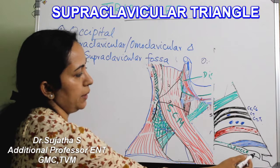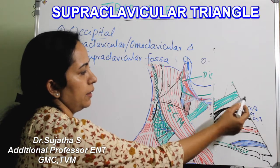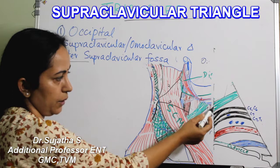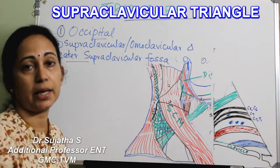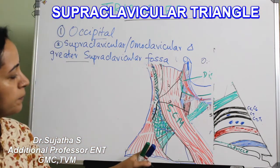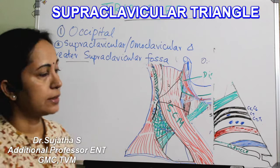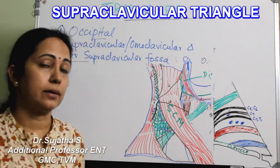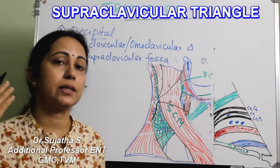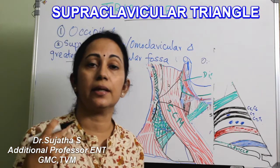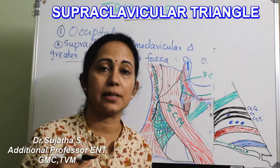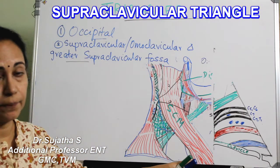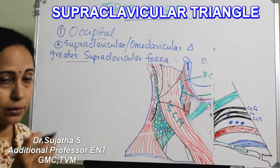So the boundaries are: below by the middle one third of clavicle, anteriorly by sternocleidomastoid, superiorly by the inferior belly of omohyoid, and posteriorly by the anterior border of trapezius muscle. As in all other triangles, the roof is formed by skin and the superficial fascia containing platysma muscle and the investing layer of deep fascia.